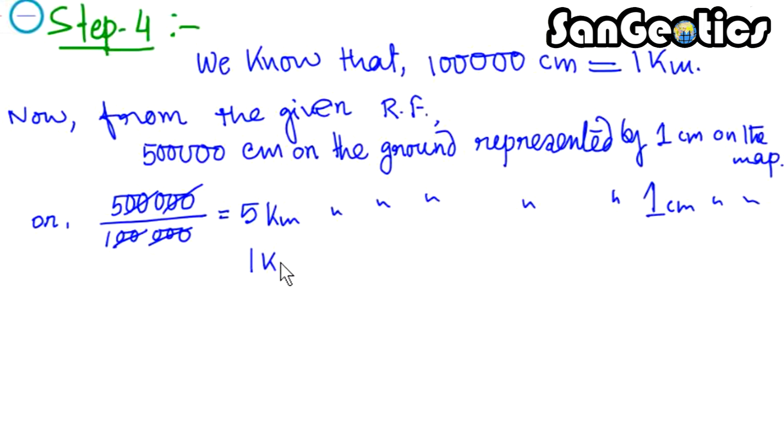Or, 1 km on the ground represented by 1/5 cm on the map. Or, 10 km on the ground represented by 10/5 equals 2 cm on the map.